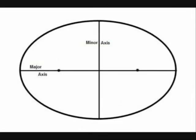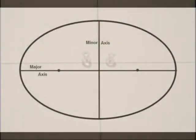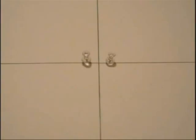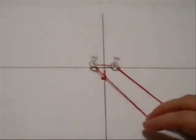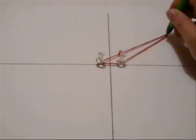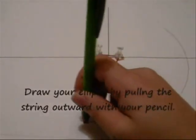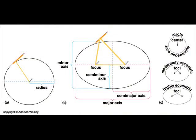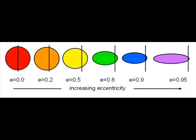An ellipse is described as having a major axis and a minor axis. You'll be given a distance between foci — use your pushpins along the major axis and push them in at that distance. Place the string around the two foci and draw your ellipse. Then calculate eccentricity. Eccentricity is unitless and ranges from zero to one. The closer it is to zero, the closer it is to a perfect circle. As eccentricity approaches one, it becomes more oval or elliptical.